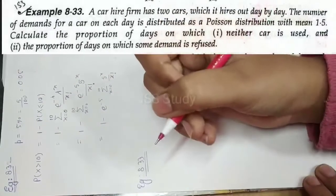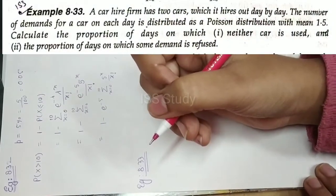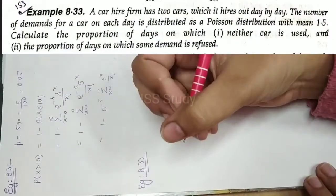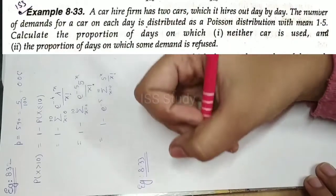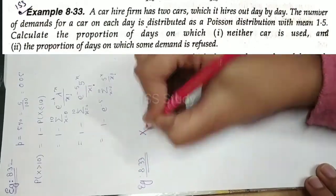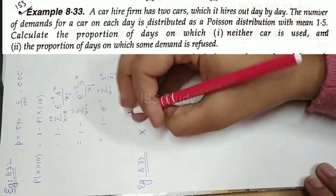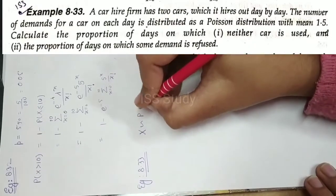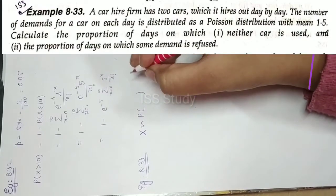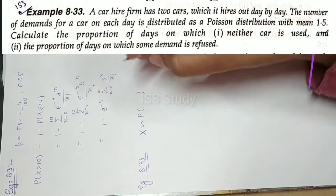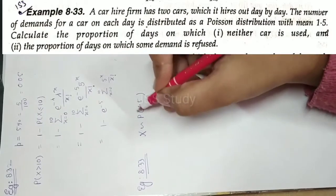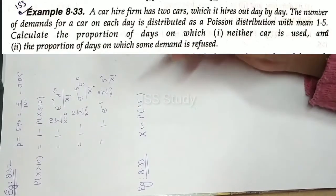Example 8.33: A car hire firm has two cars which it hires out day by day. The number of demands for a car on each day is distributed as a Poisson distribution. So x is the number of demands, and it follows Poisson distribution. The mean given is 1.5, and since mean equals lambda, we write x follows Poisson(1.5).